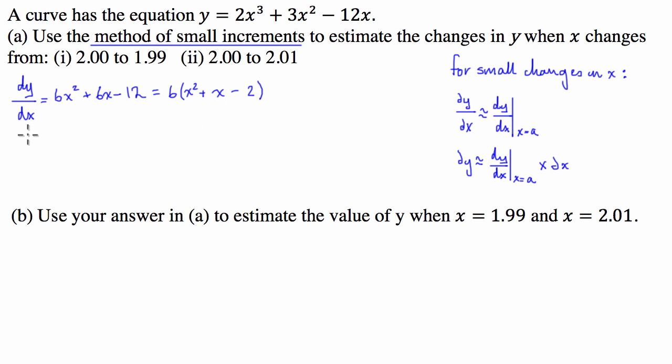Now basically from here we then have to say that the change in y, delta y, is going to be approximated by the derivative of y with respect to x evaluated at the initial point, so in these cases the initial point is 2. So we're going to evaluate our derivative at 2: 2² is 4, plus 2 is 6, minus 2 is back to 4, times 6 is 24.